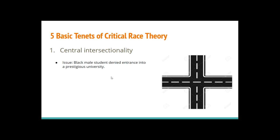Our issue is: let's say we have a Black male who was denied entry into a prestigious university. This student is trying to fight against this and say he feels he was denied because he is a Black male. His road to intersect would be the way that the school was structured by gender and by race. On one end of the road we'll have gender, and on another end of the road we'll have race.